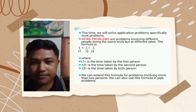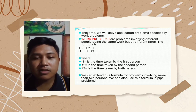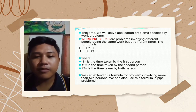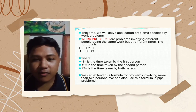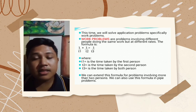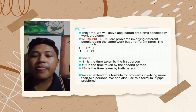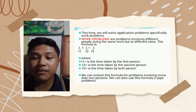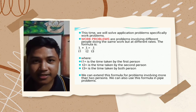Now we will solve application problems, specifically work problems. Work problems involve different people doing the same work but at different rates. The formula is: 1 over T1 plus 1 over T2 equals 1 over T3, where T1 is the time taken by the first person, T2 is the time taken by the second person, and T3 is the time taken by both persons working together. We can extend this formula for problems involving more than 2 persons.